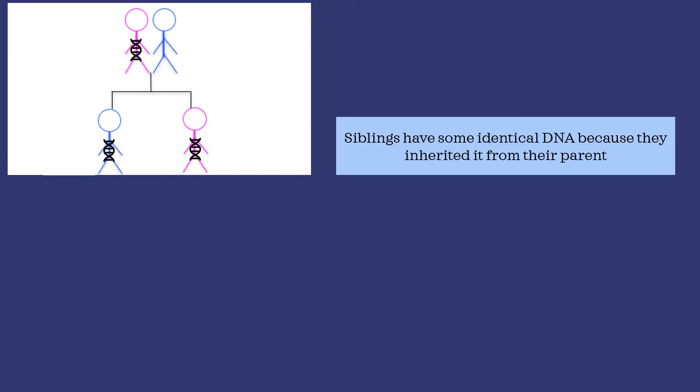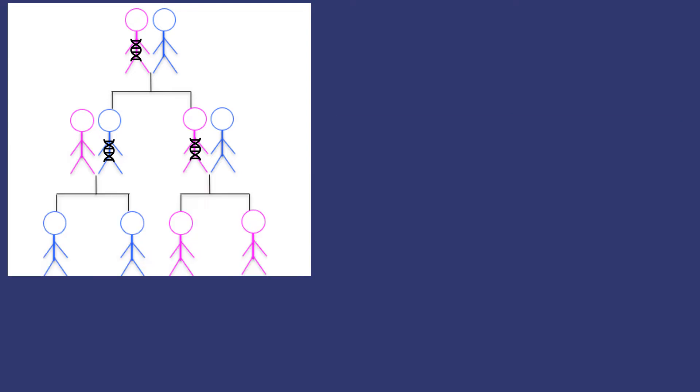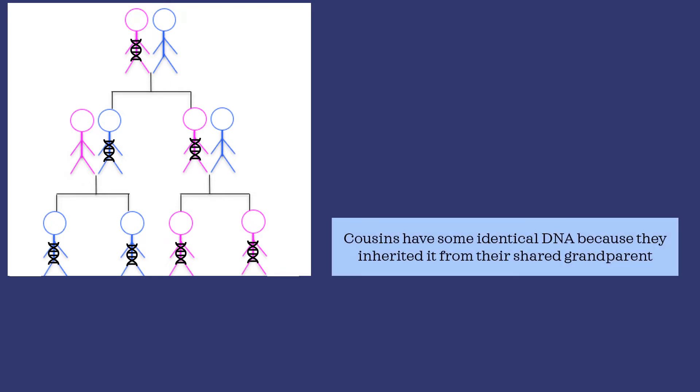Now these kids grow up and find mates and have children of their own. This sequence of DNA that originated in grandma continues being passed down to all of her descendants. At the bottom of this family tree are all of her grandchildren, so they are cousins to each other. These cousins have some identical DNA because each of them inherited it from their shared grandparent.